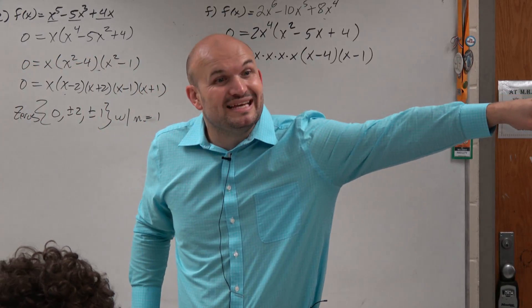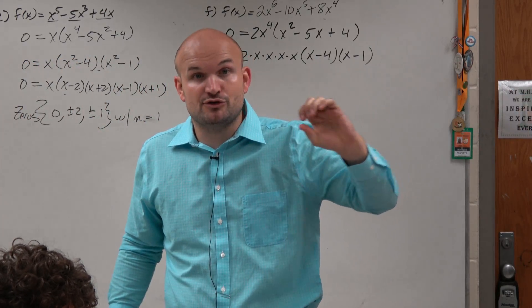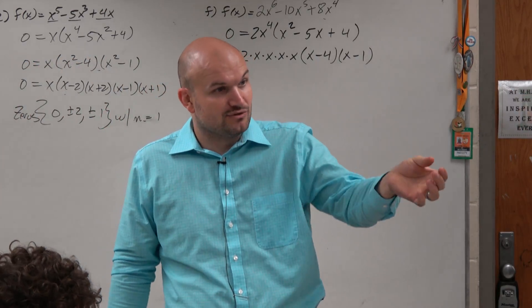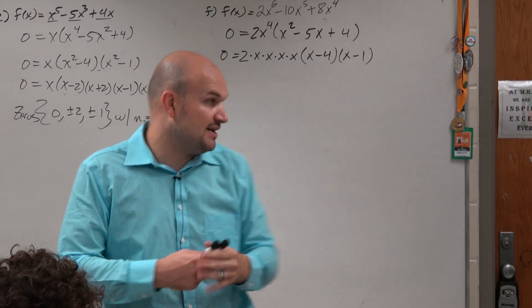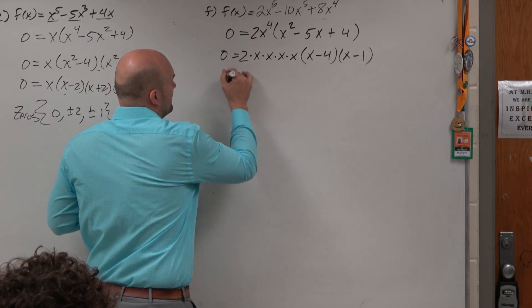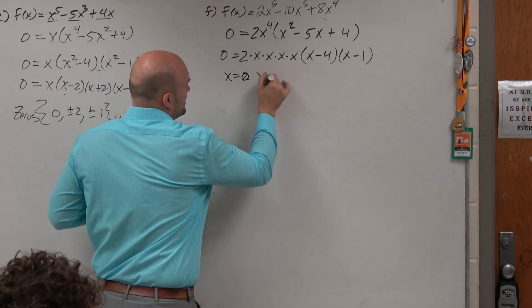It's what we call a repeated zero. Because don't you guys agree that the zero is x equals 0, like the x-intercept is x equals 0? It just happens 4 times again, right? If you were to use the zero product property, you'd say x equals 0, x equals 0, x equals 0.